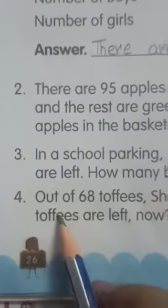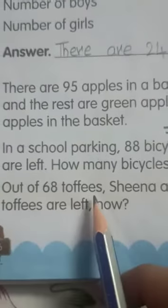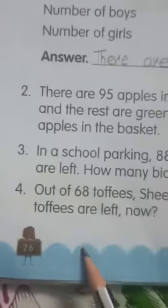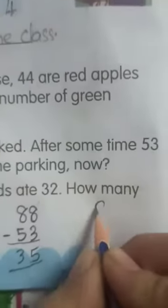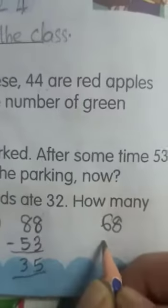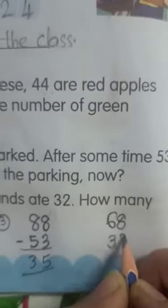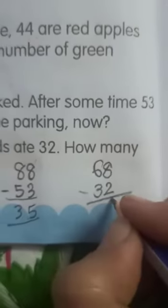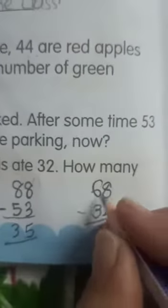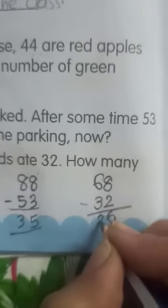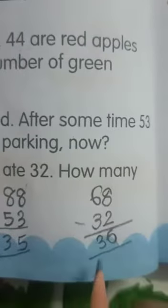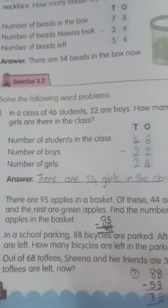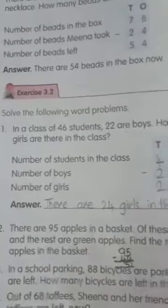Next, fourth question. Out of 68 toffees, Sheena and her friends ate 32. How many toffees are left? From 68 toffees, Sheena and her friend ate 32. So how many are left? 8 minus 2 is 6, and 6 minus 3 is 3. So there are 36 toffees left. So children, we have done this word problems.